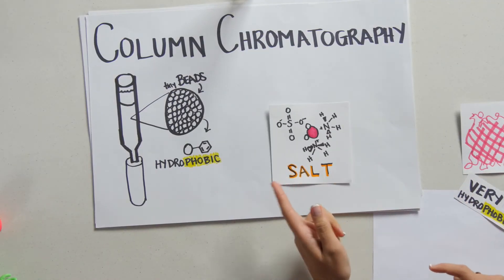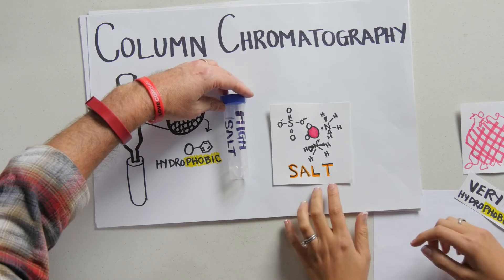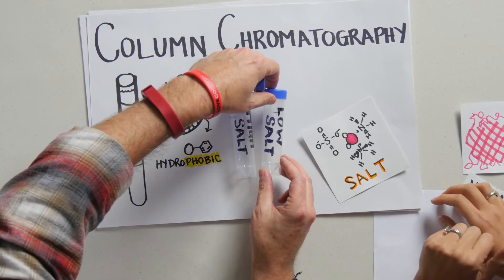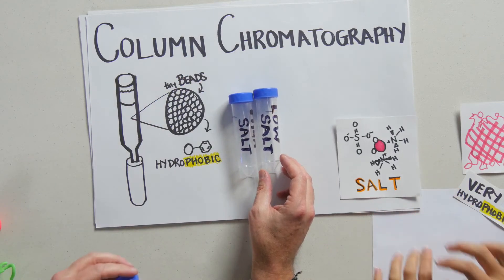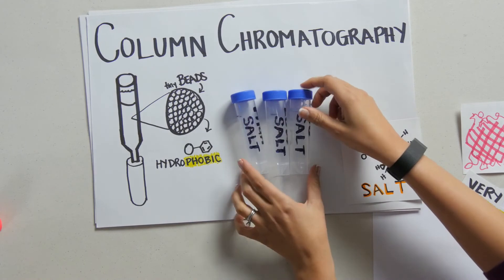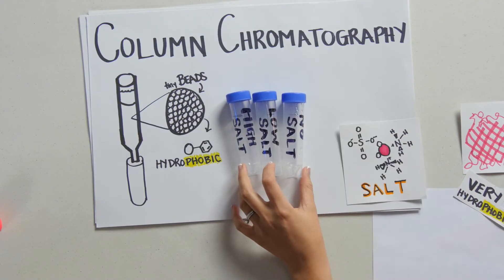And we're going to use salt to help us out. So we have a high-salt solution. We have a low-salt solution. And we have a no-salt solution. So these different concentrations of salt are going to help us sort our protein.